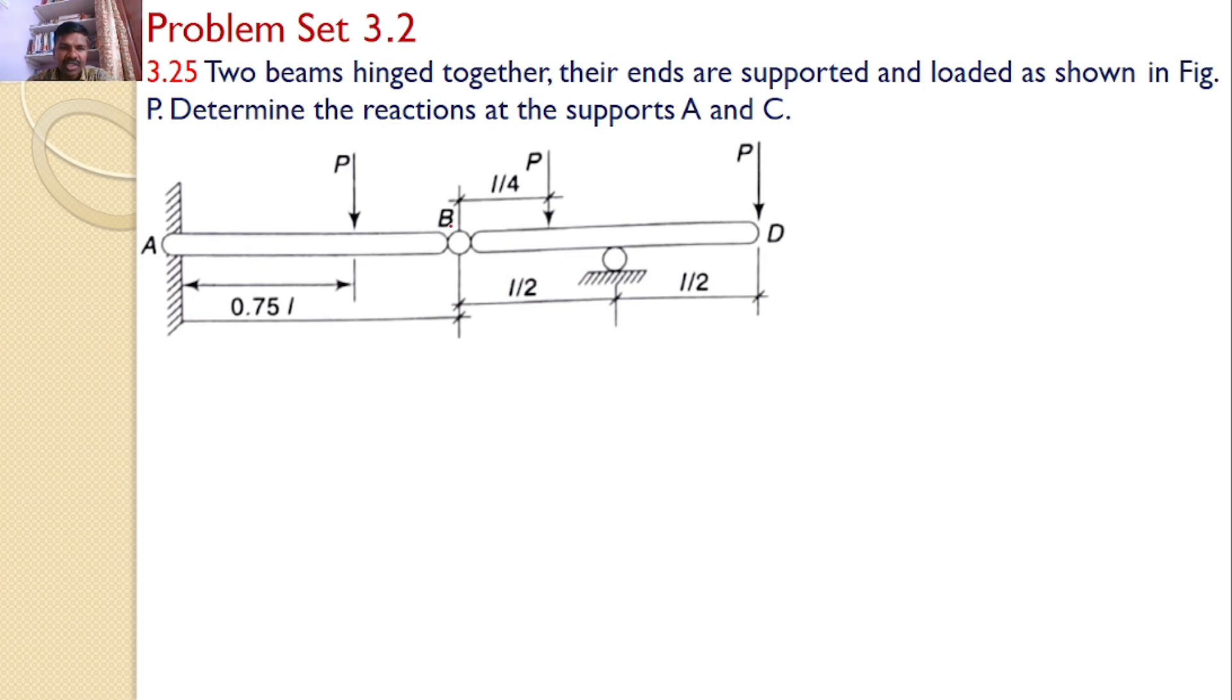There are two beams: A, B, and a roller is supported here, and another beam B, D, with the same roller support and another roller support at C. Our interest is to find the reactions at A and C.